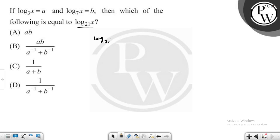Log base 21 of x is equal to 1 upon log base x of 21, which is equal to 1 upon log base x of 3 times 7. Now using the property, we have 1 upon log base x of 3 plus log base x of 7.